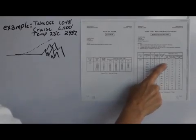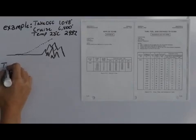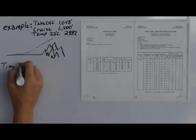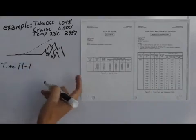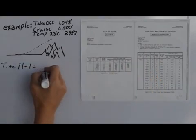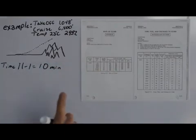But because we already started at 1,000, we can subtract that 1 off of there. So where the time would have been 11 minutes, it's minus the 1 because we already started at 1,000 feet, so it's saying that it would take us about 10 minutes in order to climb to our 6,500.